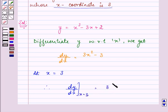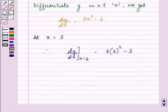3 into 3 squared minus 3, which is equal to 3 into 9 minus 3, further equal to 27 minus 3 which is equal to 24.